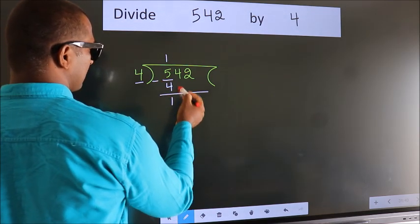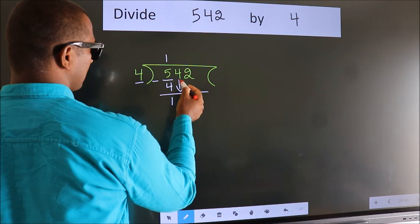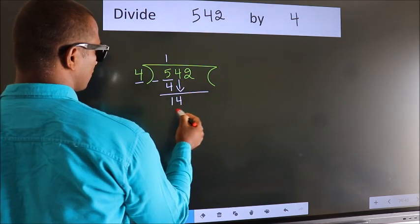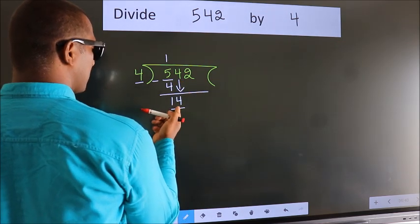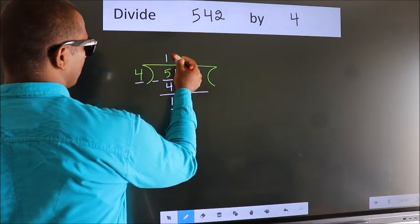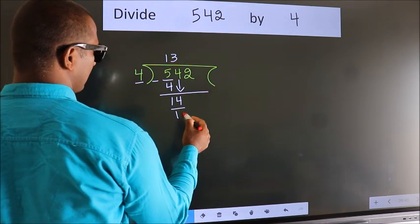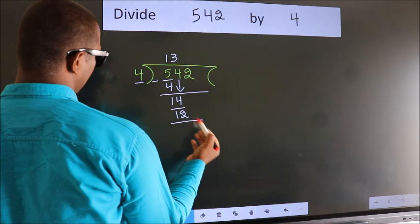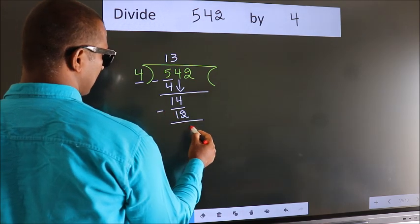After this, bring down the beside number. So 4 down, so 14. A number close to 14 in the 4 table is 4 threes, 12. Now we subtract. We get 2.